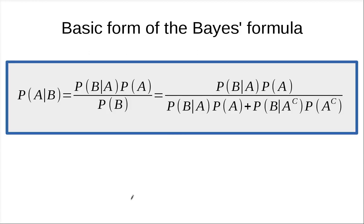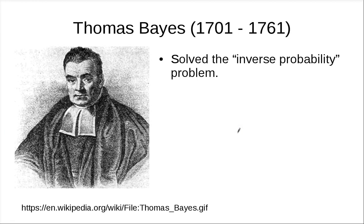What we've just derived is one form of the Bayes formula. It's the expansion: P(A|B) equals P(A∩B) over P(B). Expanding further gives the full Bayes formula. On the right-hand side, you see B given A and B given A-complement — but what we want is A given B. So it's an inverse problem. The Bayes formula is named after Thomas Bayes, a mathematician from the 17th century who solved this inverse probability problem.